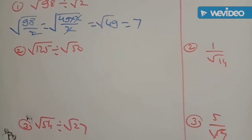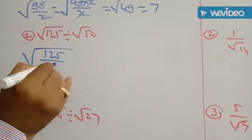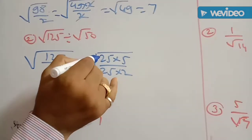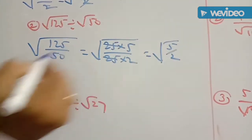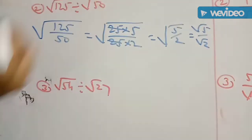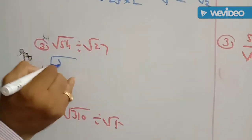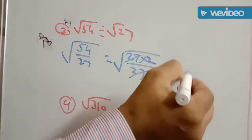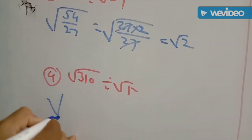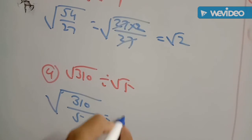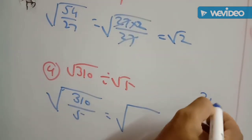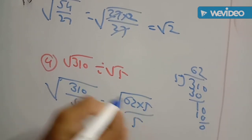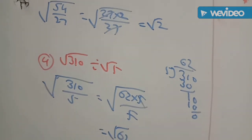Third: root of 54 divided by root of 27. Write as root of 54/27. 27 goes into 54 twice, so 27 gets cancelled, giving root of 2. Fourth: root of 310 divided by root of 5. Factorize 310 by dividing by 5: 310 equals 62 into 5. The 5 gets cancelled, giving root of 62.